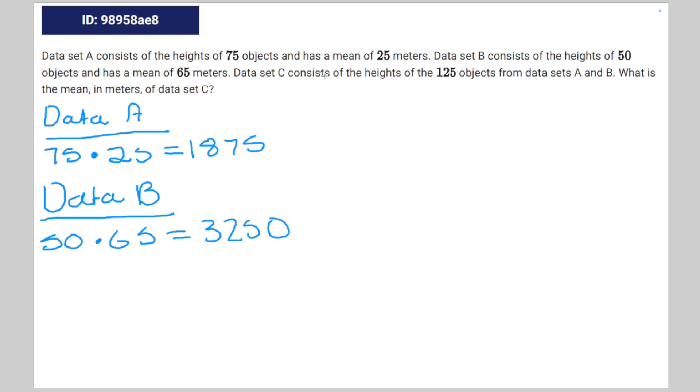To find the total height of dataset C, I'm just going to take the heights of dataset A and dataset B. So that's going to be 1875 plus 3250. And that's going to be equal to 5125.